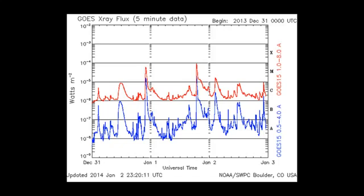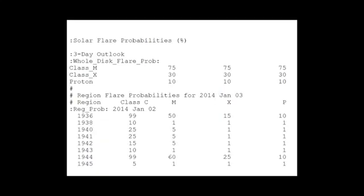And we've got a lot of activity. You can see this is the X-ray flux. This is current out of Boulder. And look, guys, this is the probabilities. Notice M is 75%, X is 30%. Normally, that's between 1 to 5. So they are looking for it.